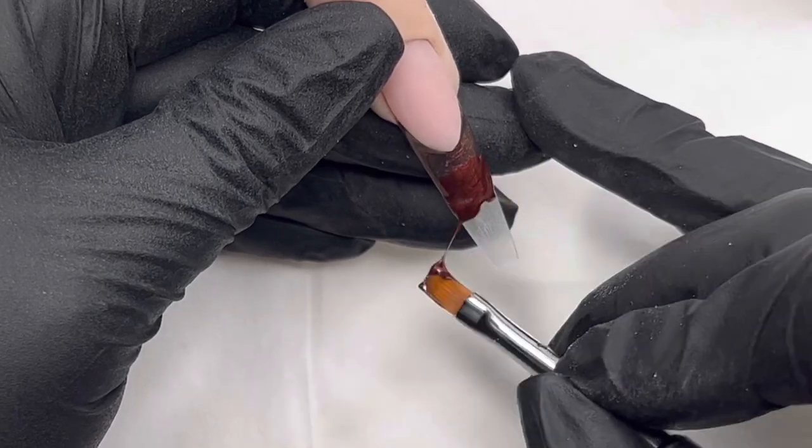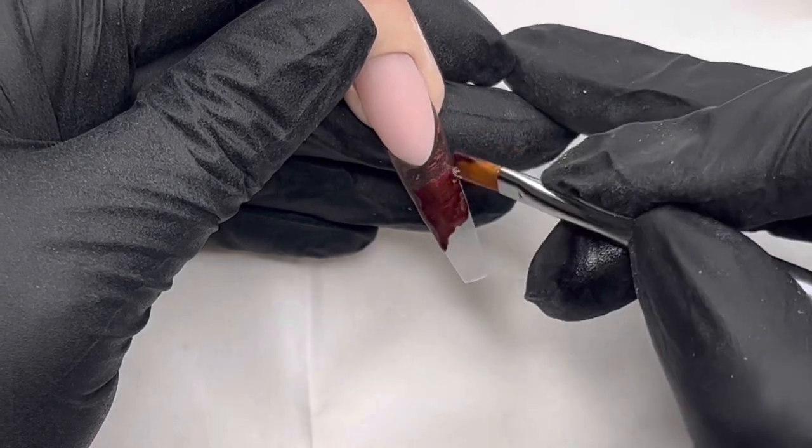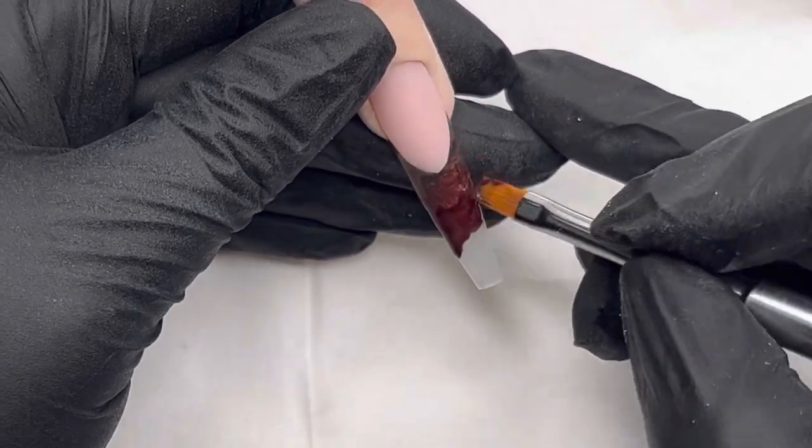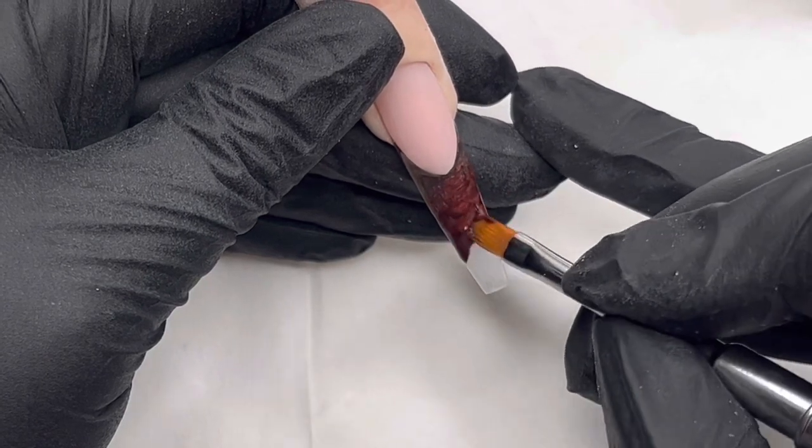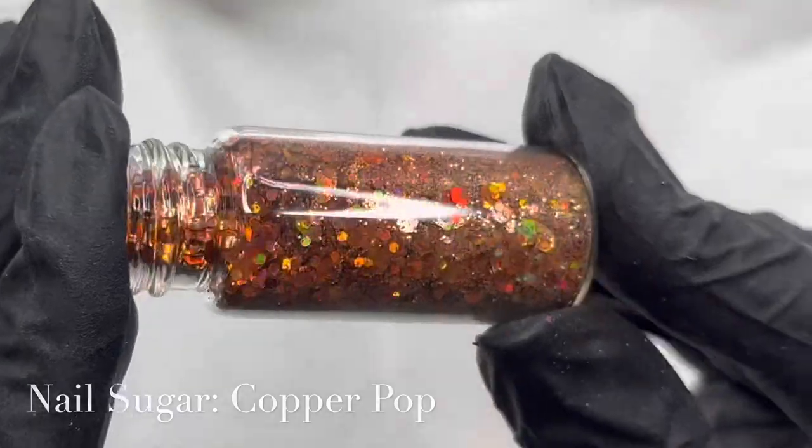And then some of the Cleo as well, which is just that kind of gorgeous maroon, sort of maroony burgundy red kind of color. And they just blend so nicely together. And of course, what would be an autumn nail without the sparkle?